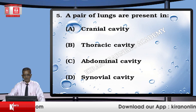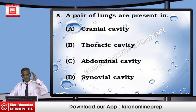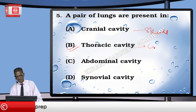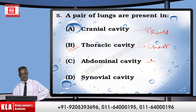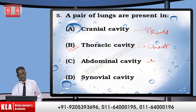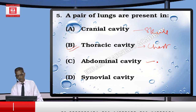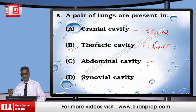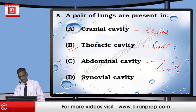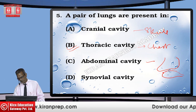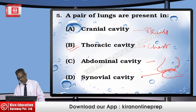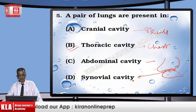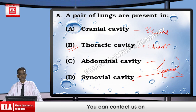Question: A pair of lungs are present in which cavity? The cranial cavity is in the skull. Thoracic is the chest. Abdominal is below the diaphragm down to the pelvic region. Synovial cavity is the space between two bones at joints like the elbow or knee, filled with synovial fluid. The correct answer is the thoracic cavity — that is the chest cavity where the pair of lungs are present.